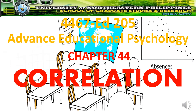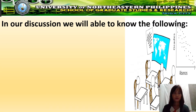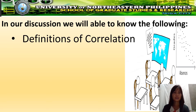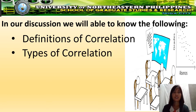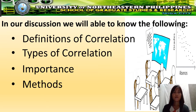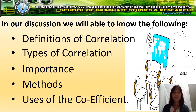In this video presentation, we will discuss Chapter 44 in Advanced Educational Psychology, which is about correlation. In our discussion, we will be able to know the following: definitions of correlation, types of correlation, importance, methods, and the uses of coefficient.